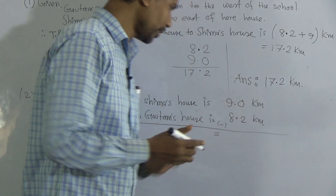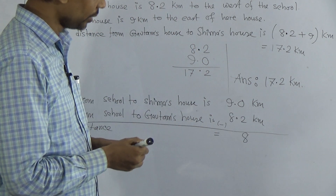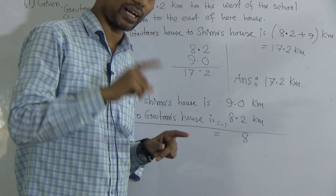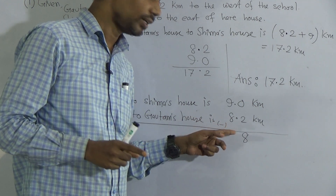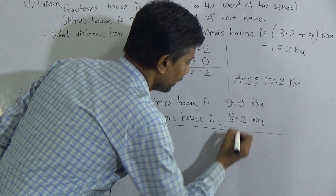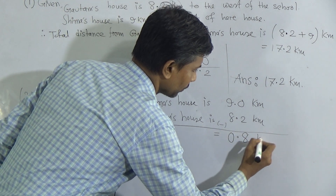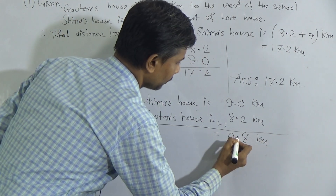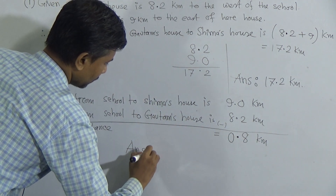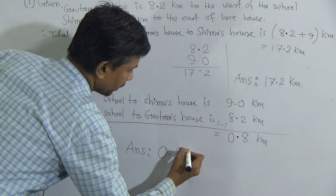So you have to consider the 0 as 10. Then 10 minus 2 equals 8 — write 8 here. Now you have 1 carried over; 1 added to 8 gives 9. Subtract 9 from 9, which equals 0 — write 0 here. Put the decimal point. So the answer is 0.8 kilometers.